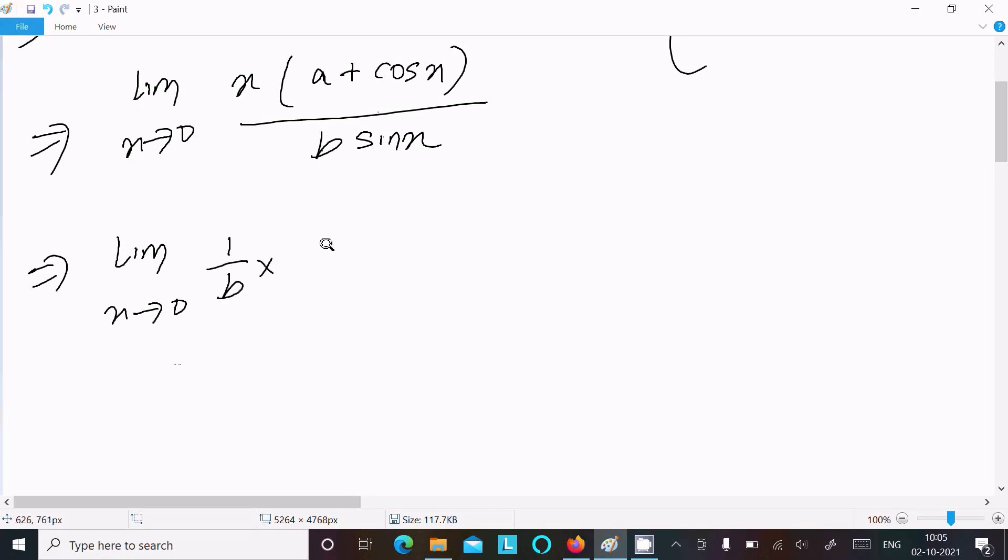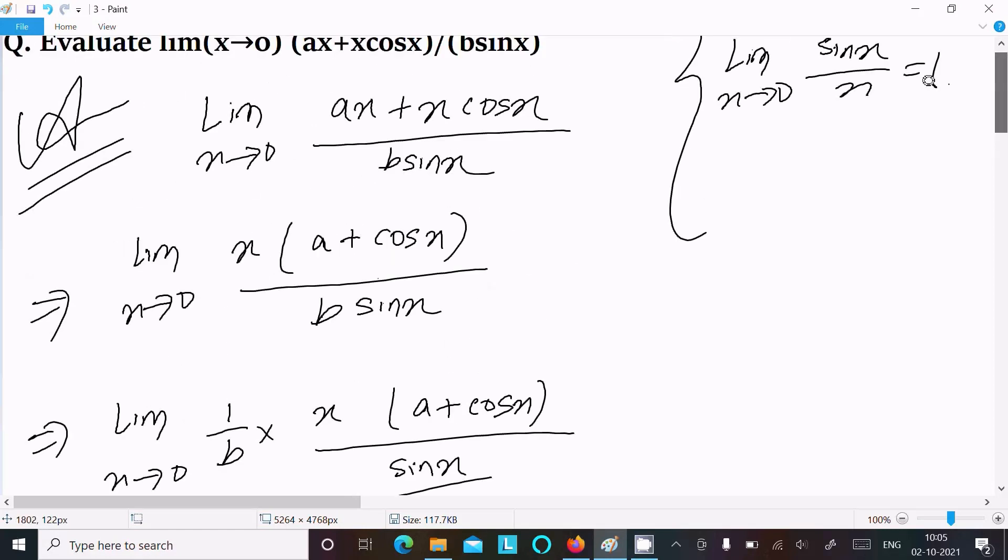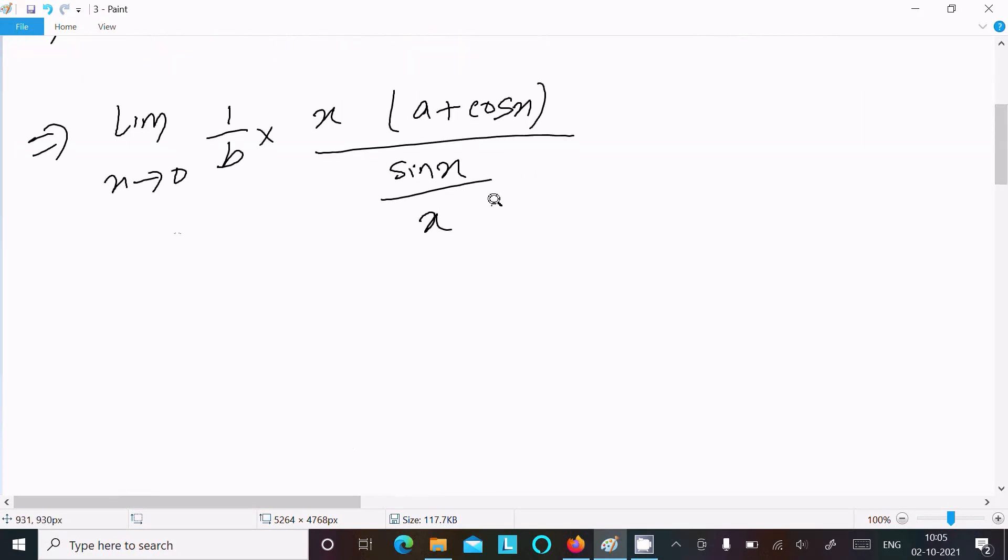And we have x times (a + cos x) over b sin x. We're going to rewrite this as sin x by x. For this, we need to divide by x and multiply by x.